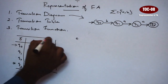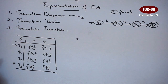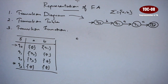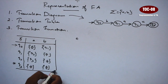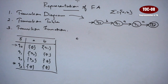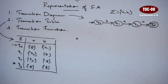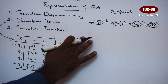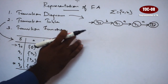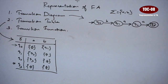Here we have the transition function, initial state, and final state. This is the transition table representation. Next is the transition function representation.